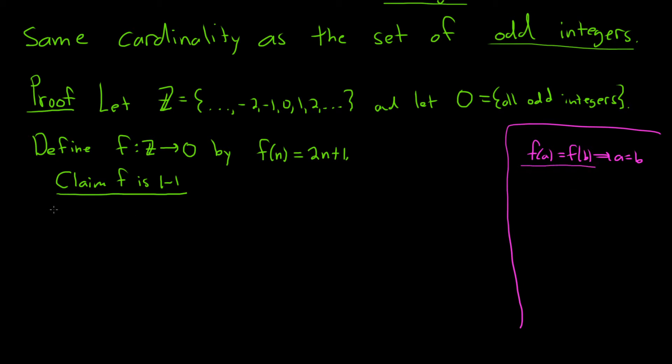suppose f of a is equal to f of b. So what does this mean? Well, f of a is simply 2a plus 1. Likewise, f of b is 2b plus 1. Oh, this worked out really nice. We can subtract 1 from both sides, so we get 2a equals 2b, and then divide by 2, hence a equals b. So this shows f is 1 to 1.